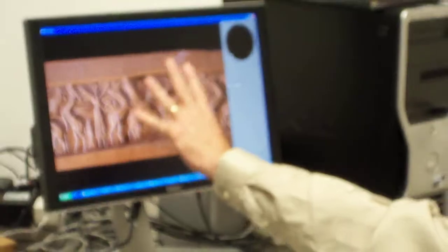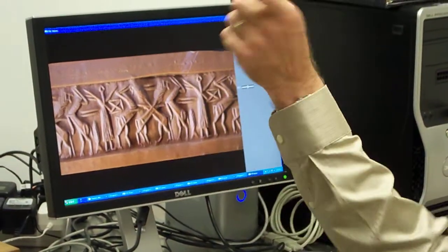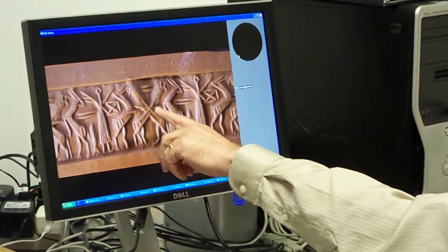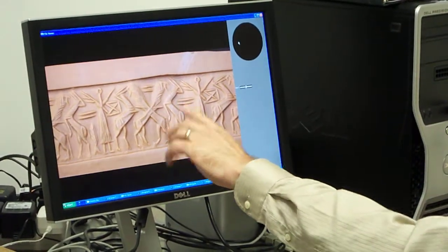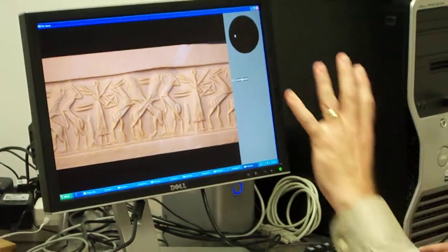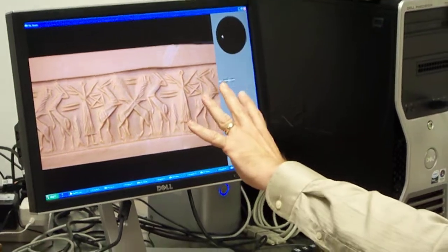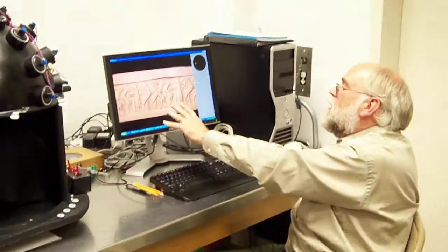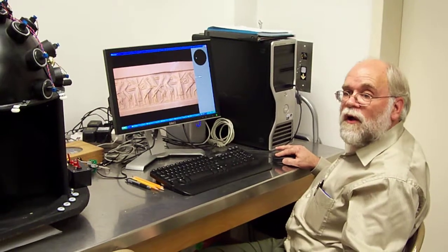And this is one of the seals is actually out on display. In certain lights, if you just get one picture of the impression, which is what is normally published, certain things show up real well, and certain things don't show up at all.